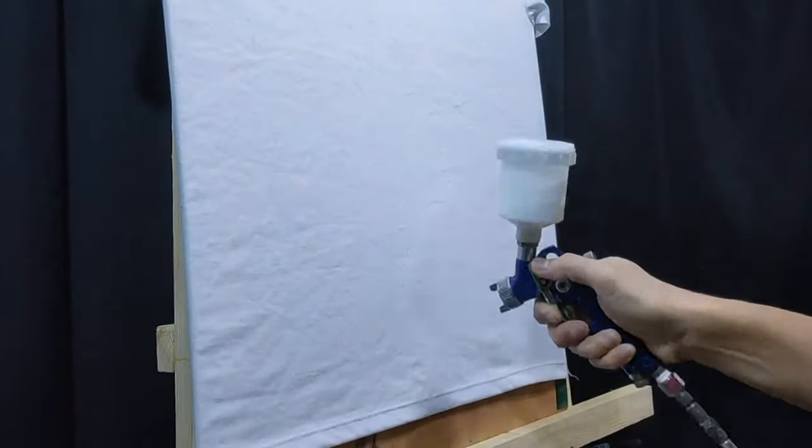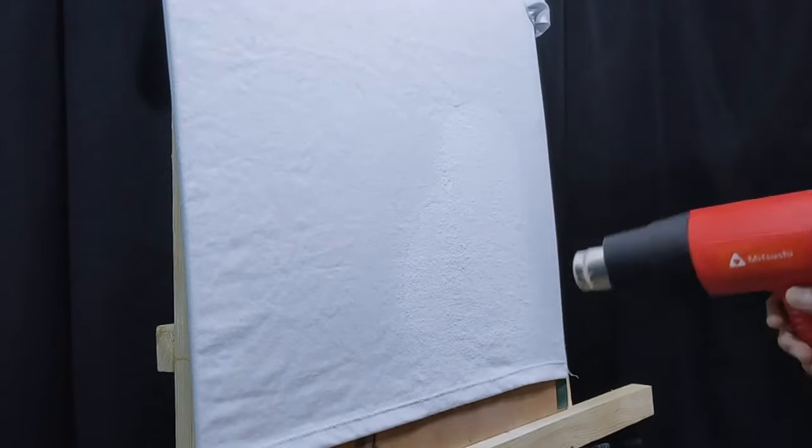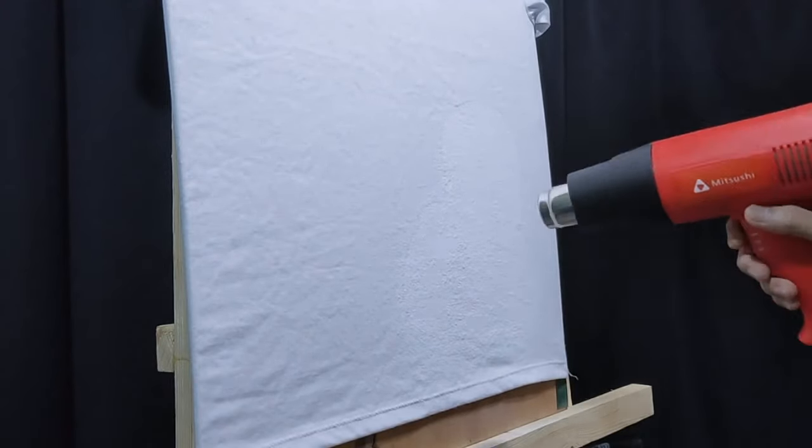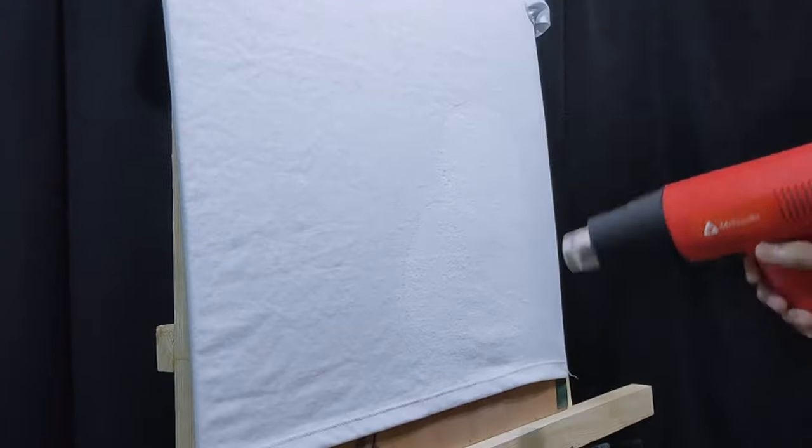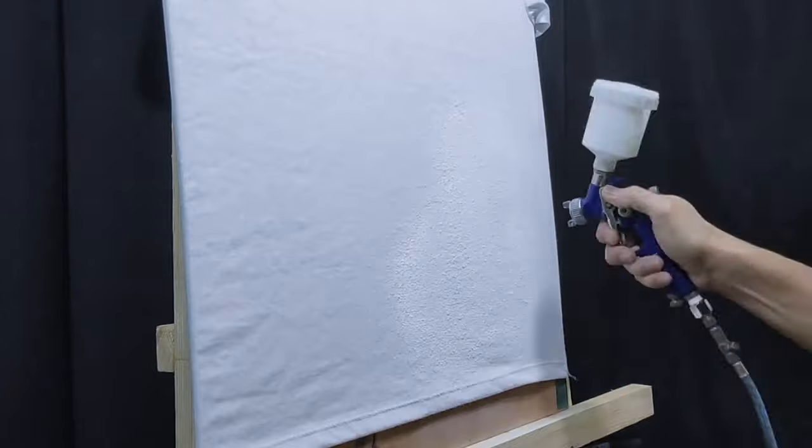The next step is to apply thick layers of white paint. Usually, three to four layers are enough, but if you want to apply more, it's better. On every layer to hasten the process, you can use a hot air gun or a hair blower.